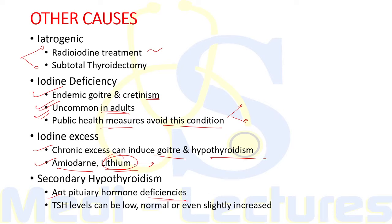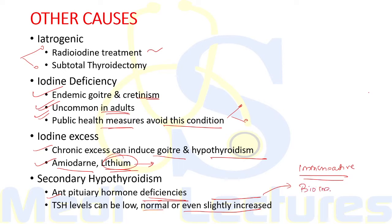In secondary hypothyroidism associated with other anterior pituitary hormone deficiencies, TSH levels can be low, normal, or even slightly increased. This is because the TSH is immunoactive — detected by assays in thyroid function tests — but is bio-inactive and cannot act on TSH receptors to stimulate formation of T4.